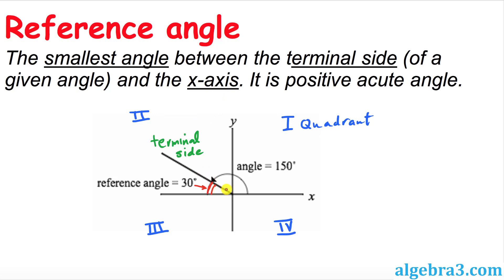As you can see over here, we have an example where the angle is 150 degrees. So our terminal side turns out to be this one, and the reference angle is going to be simply the nearest x-axis and that terminal line, which turns out to be 30 degrees. And keep in mind that it is in the second quadrant as well.